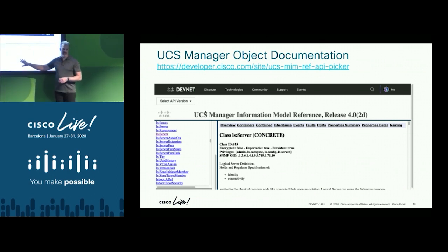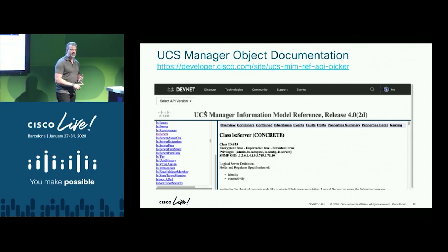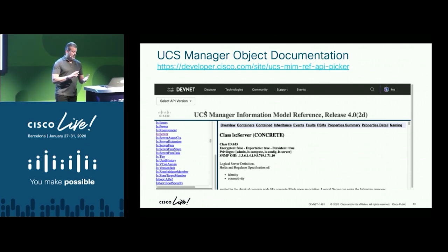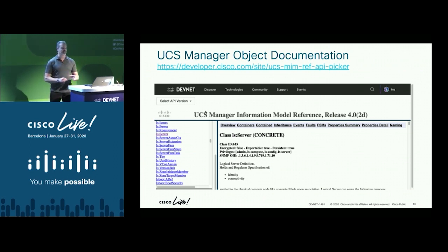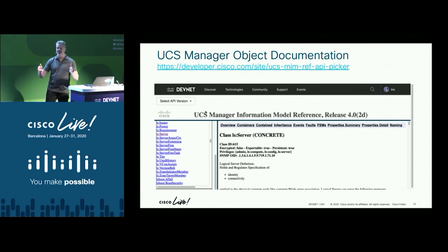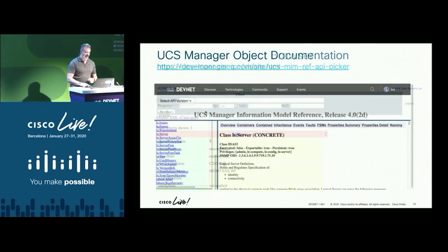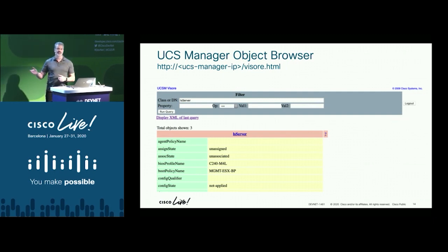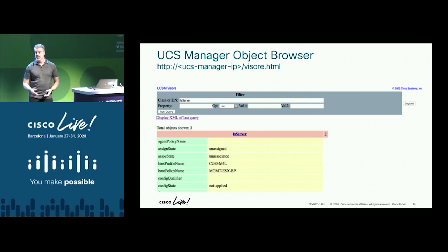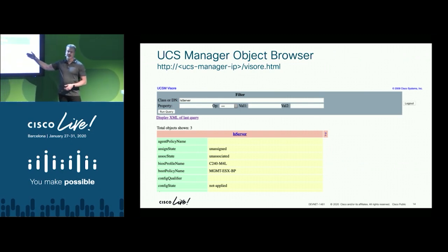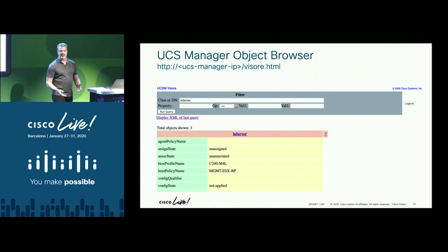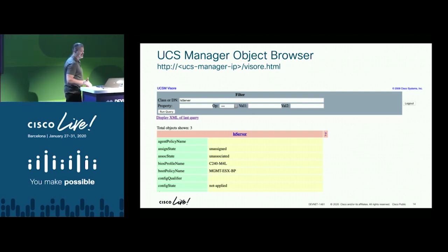We have the object model documentation — you can look at any object, see how it's contained, what it contains, what its attributes are, and the properties for those attributes. For example, for a VLAN name you'd find the regular expression defining valid names: 1 to 32 characters. For a VLAN ID, the valid ranges. All of that is in the object model documentation. We also have the object model browser, Visore, which comes with every UCS Manager, IMC, and UCS Central — just go to the IP address slash visore.html.